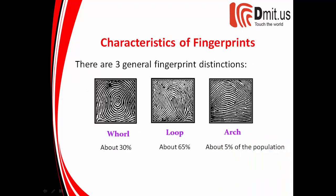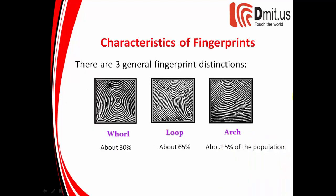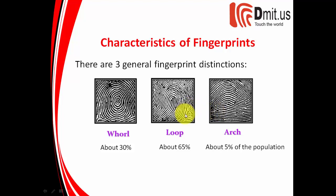If we go back and look at our diagram, when I look at the whorl, here is a delta and here is a delta. It's an area where the ridges actually converge and create kind of a triangular shape. On the loop, where would you identify the delta? Hopefully you indicated right here, opposite of where the loop forms.